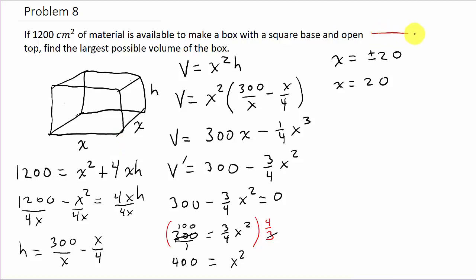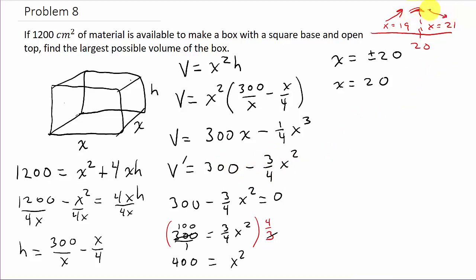To confirm it's a maximum, we pick test values x = 19 and x = 21. Plugging 19 into V′ gives a positive value — so V is increasing there. Plugging in 21 gives a negative value — V is decreasing. This confirms x = 20 is a maximum.